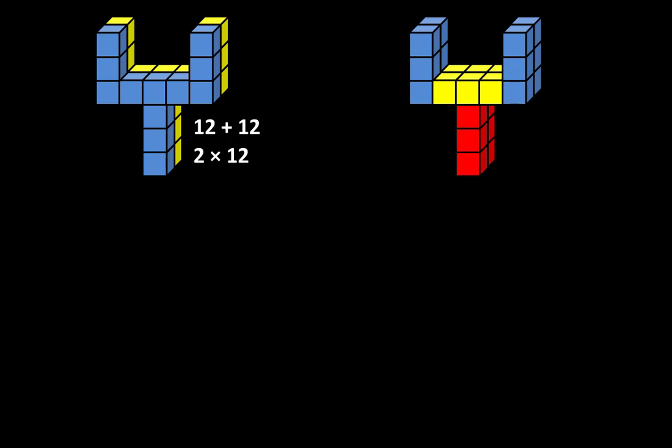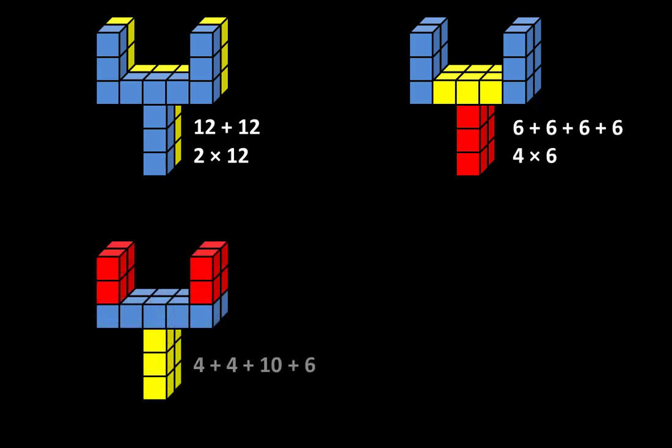The second structure can be described as 6 plus 6 plus 6 plus 6. Or it can be described as four groups of 6. The third structure can be described as 4 plus 4 plus 10 plus 6. Or it can be described as two groups of 4 plus 10 plus 6.